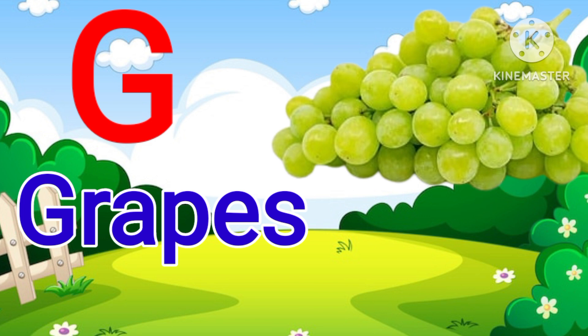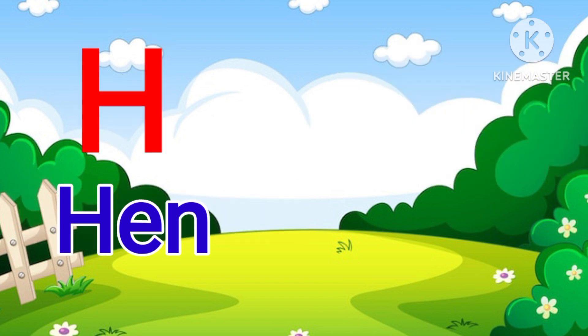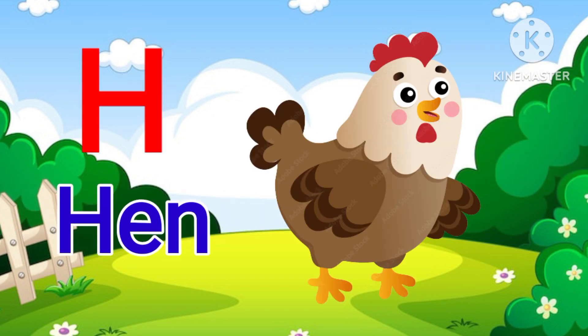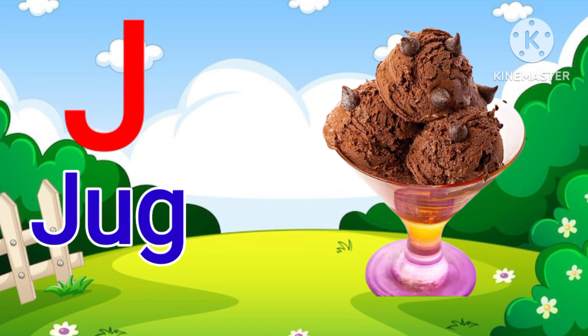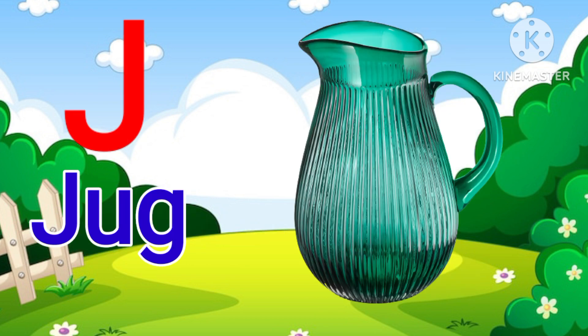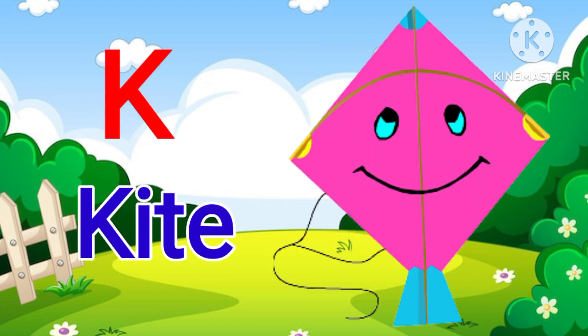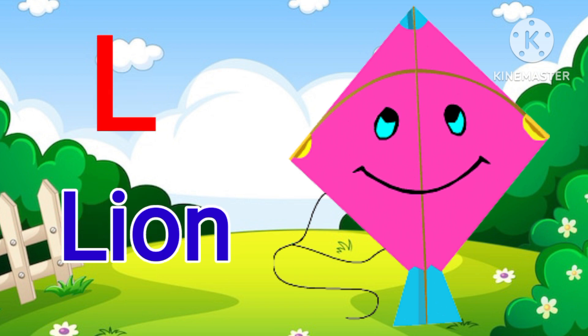G for Grape, H for Hain, I for Ice Cream, J for Jug, K for Kite.